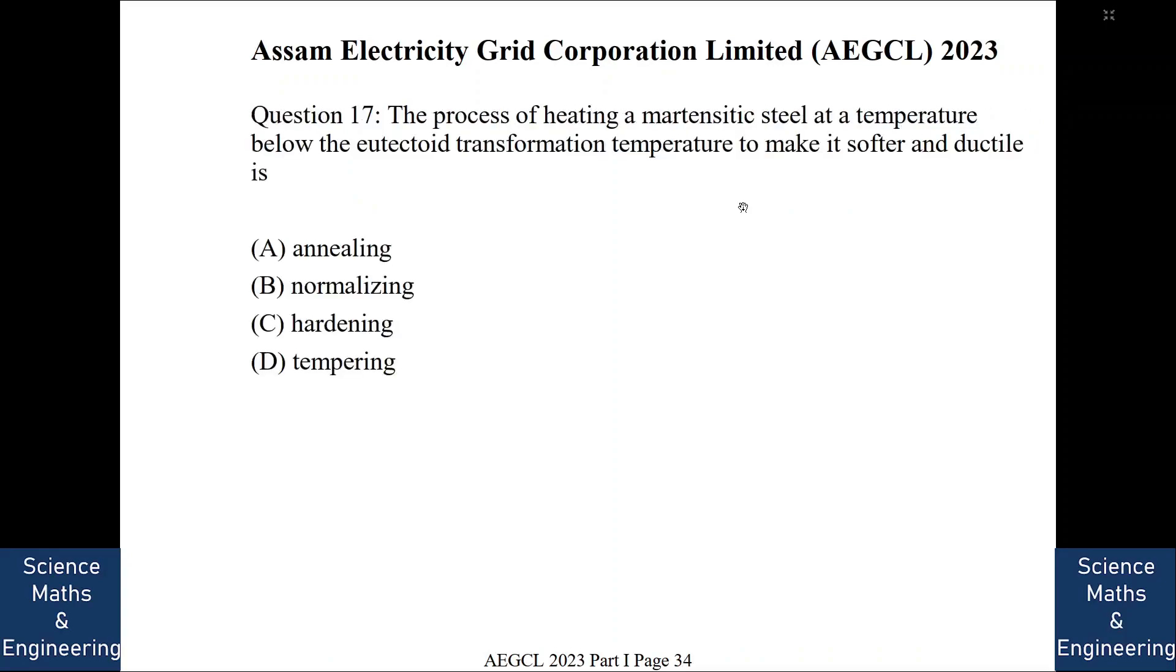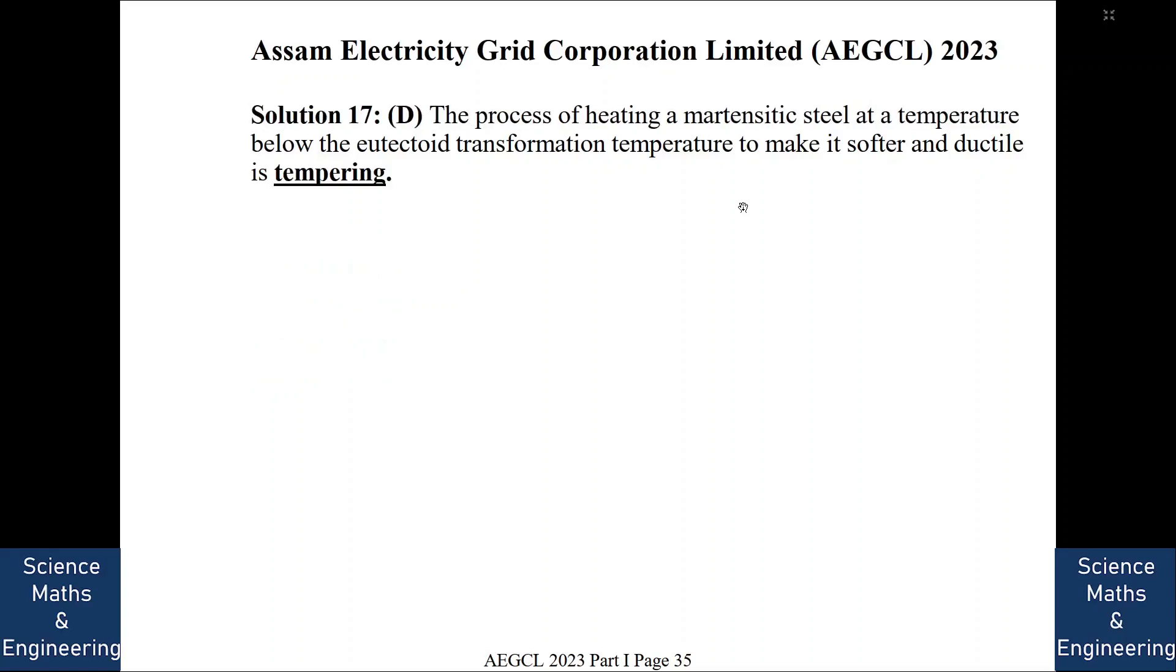The process of heating a martensitic steel at a temperature below the eutectoid transformation temperature to make it softer and ductile. It is known as. So it is called tempering. We will go to the next question.